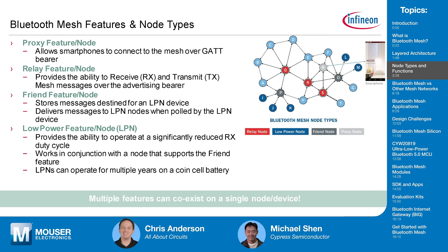The friend node's purpose is to connect to low power nodes, sending them periodic updates. A low power node connects to its friend node on a predefined interval. For example, a temperature sensor connected to a friend node doesn't need constant updates — you might configure it to send an update every minute, every five minutes, or every ten minutes.